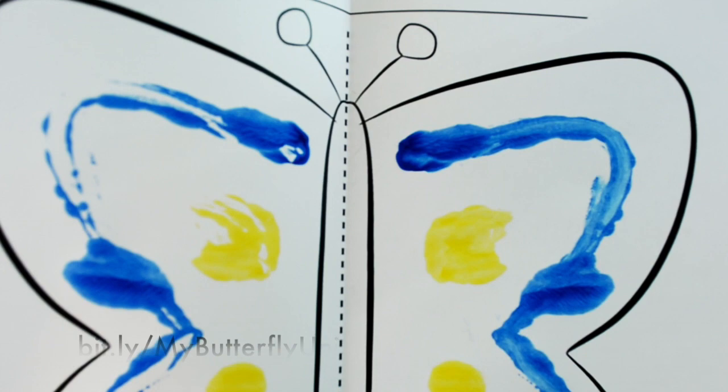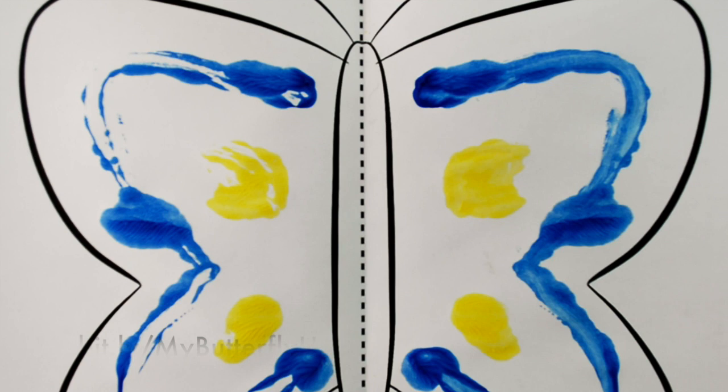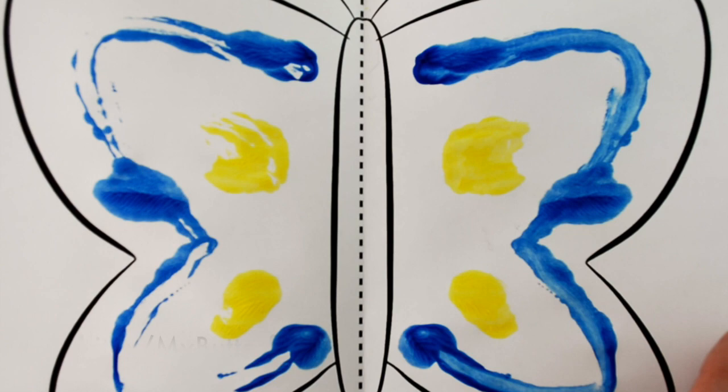Okay, so if they do it correctly what's going to happen is of course that they're going to see the same design more or less on both sides of the paper. It's not going to come out perfectly like you can still see that this side is much darker but they're going to get the idea.